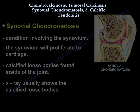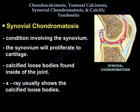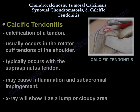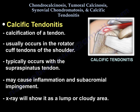Synovial chondromatosis is a disease of the synovium, so it occurs inside the joint. The synovium proliferates and some of it changes to cartilage — metaplasia. The cartilage partially calcifies, producing loose bodies inside the joint that can be seen on x-ray. Calcific tendinitis means calcification of a tendon, usually in the shoulder — usually the supraspinatus — usually associated with endocrine problems like diabetes or hypothyroidism, and it can cause inflammation and subacromial impingement.